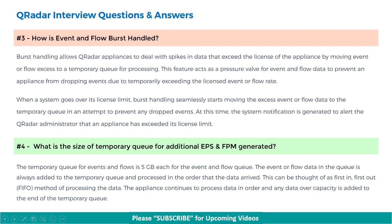Next, what is the size of the temporary queue for additional EPS and FPM generated? The temporary queue for events and flows is 5 GB each for the event and flow queue. The event or flow data is always added to the temporary queue and processed in the order it arrived — first-in, first-out. The appliance continues to process data in order and any data over capacity is added to the end of the temporary queue.